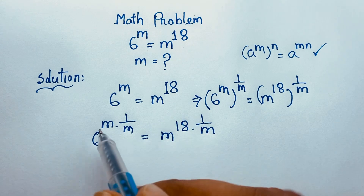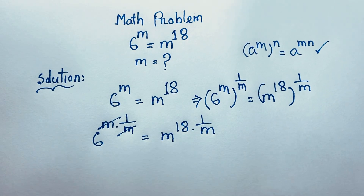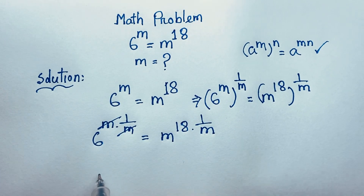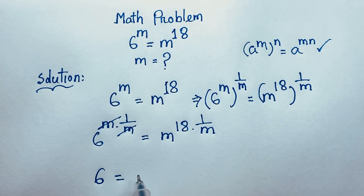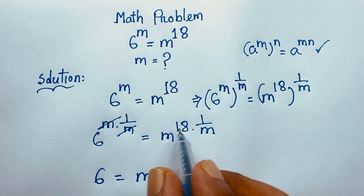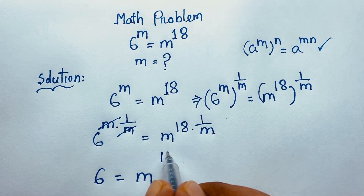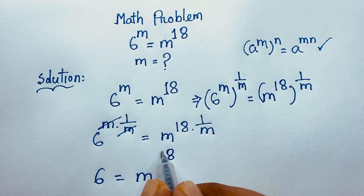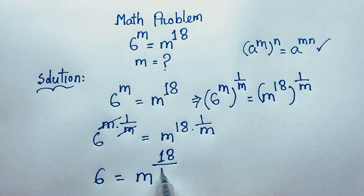Now, this m and this m cancel out. We find that it will be 6 is equal to m to the power 18 over m.